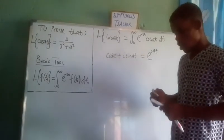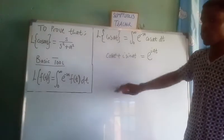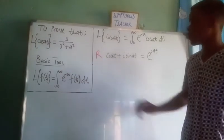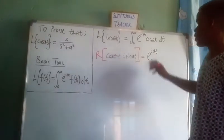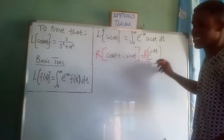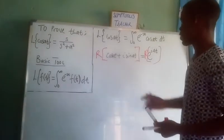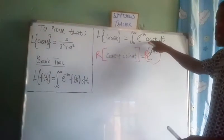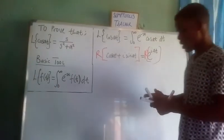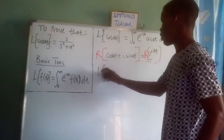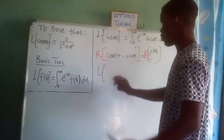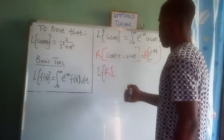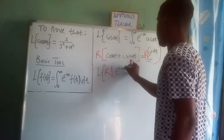So cosine is in the real part and sine is in the imaginary part. We are going to take the real part of both sides. Taking the real part of both sides, the real part gives us cosine(at). So we have the Laplace transform of the real part of e to the i·a·t.